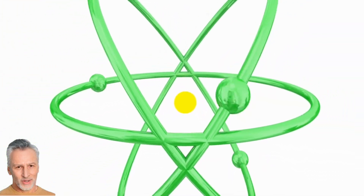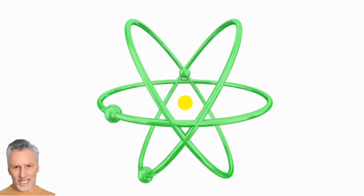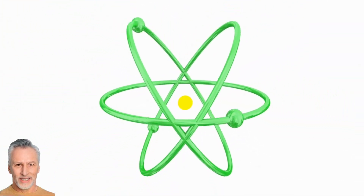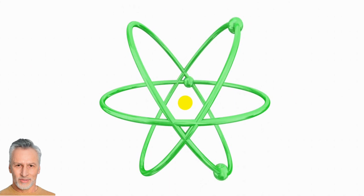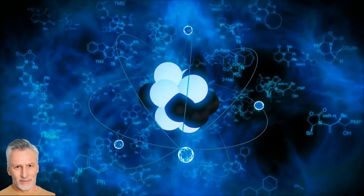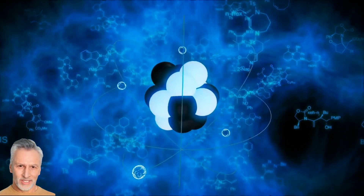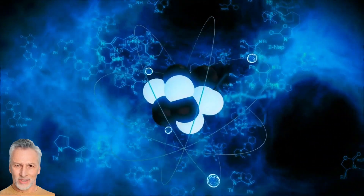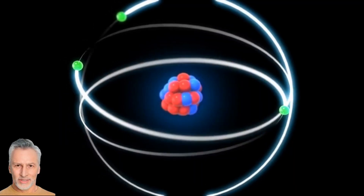Radioactive dating relies on the natural process of radioactive decay, which is the spontaneous breakdown of certain unstable atomic nuclei. Atoms are made up of a nucleus at the center, which contains protons and neutrons, surrounded by electrons.